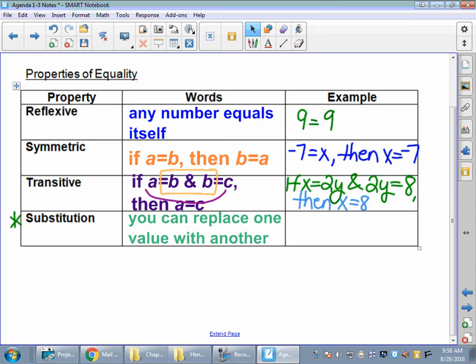We did substitution in the last section with evaluate. Evaluate 2X squared if X equals negative 3. That's substitution. We're substituting the negative 3 in there. We're doing the math.